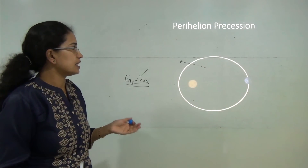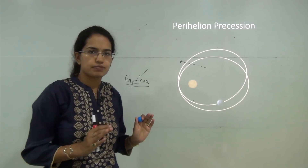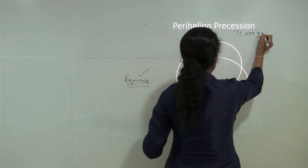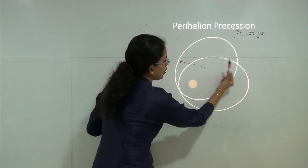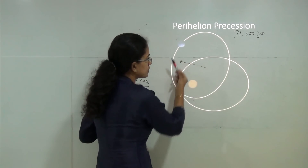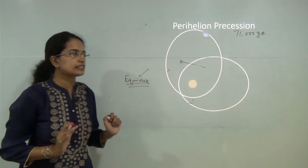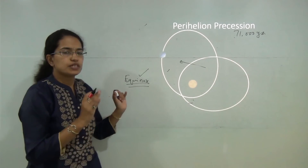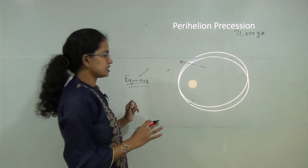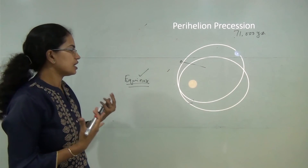The second type of precession is perihelion precession, also called orbital precession. Orbital precession takes 71,000 years to complete, and it explains that the orbit of the earth itself is changing — the orbit shifts over time. Because of these two types of precession — perihelion precession and axial precession — there are important phenomena in our solar system.